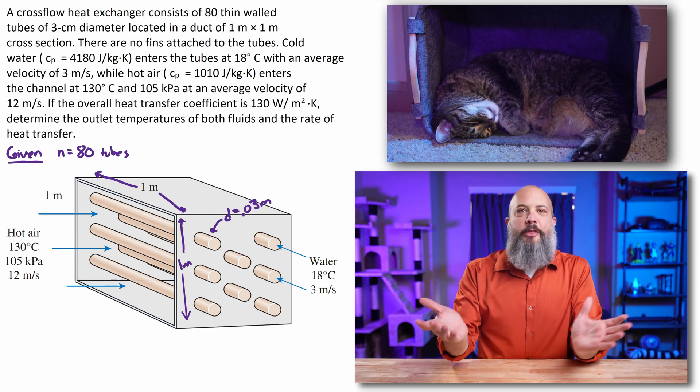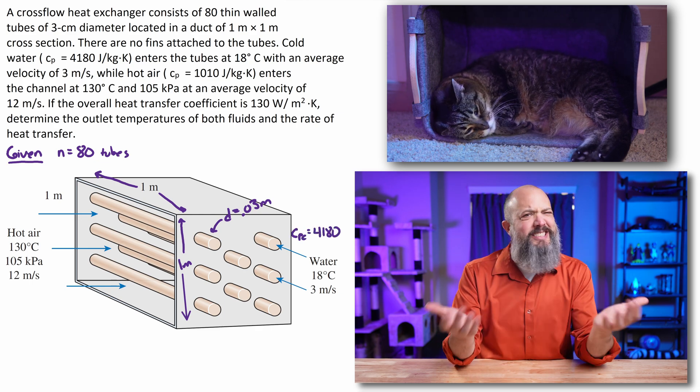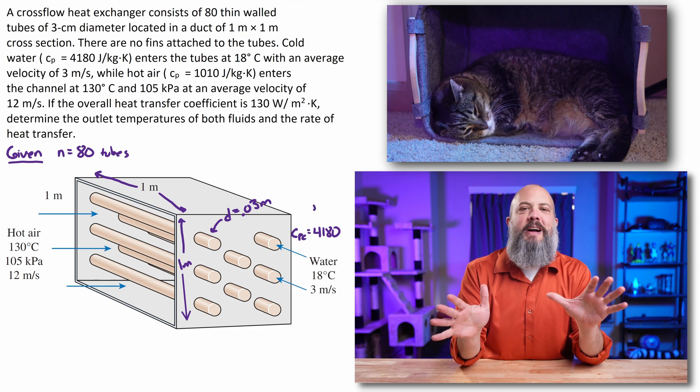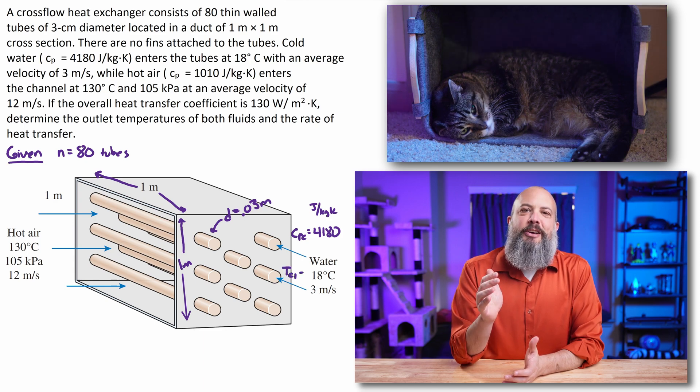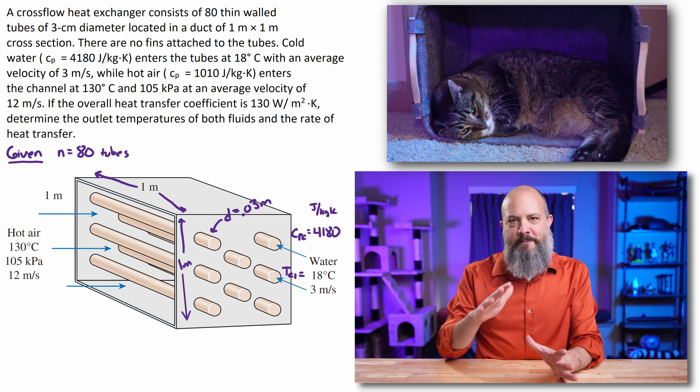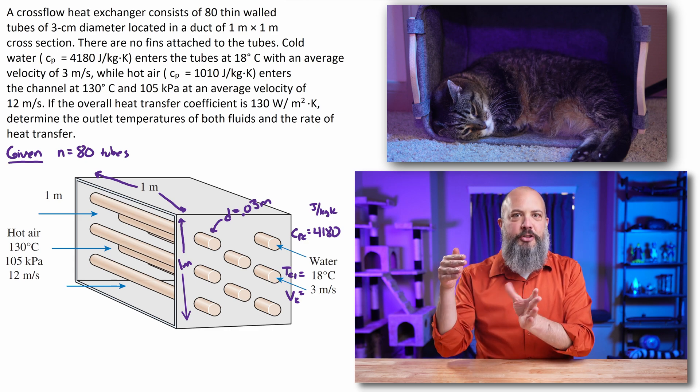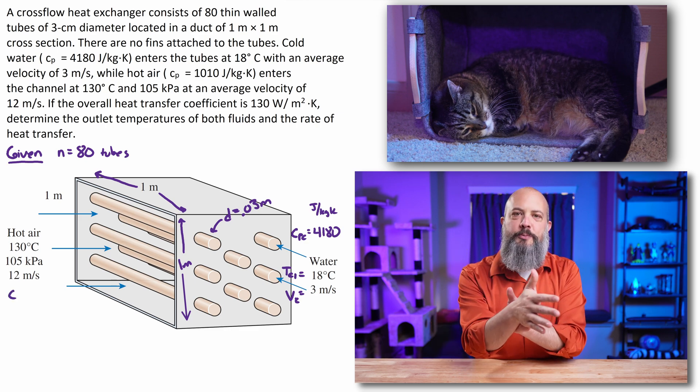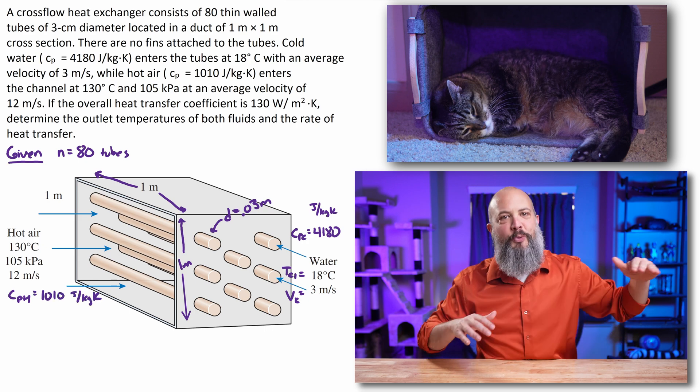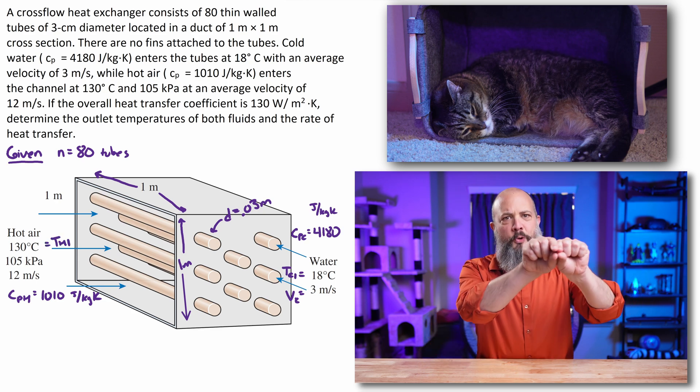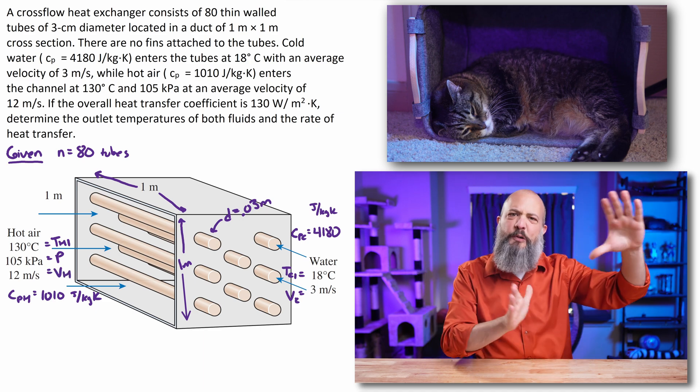So I start off by just reading through the problem and writing everything down on the picture because it's easy to miss things and easier to find everything on the image. Probably the most confusing part is the cross-sectional area, the one meter by one meter. On the picture, like the figure on the page here, it really looks like the side that the tubes are in, the direction that the tubes are going, that looks like a one by one square. Whereas the direction across the tubes where the hot air is flowing, that looks much wider than one meter. Like the one meter height and the one meter width, those don't visually look the same.